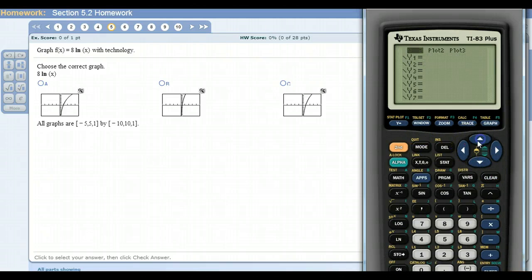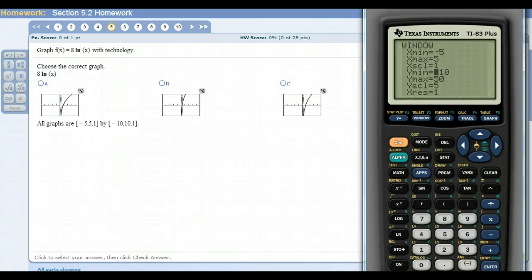All right, so I'm going to type in exactly what I see, 8 times the natural log of x. Before I hit graph, I'm going to hit window and I'm going to change it to all the stuff I see here. So this is the x min, the x max, and then the y min, the y max, and the y scale. So y min was already negative 10, y max is now 10, and the y scale is 1.